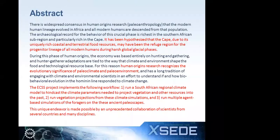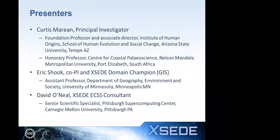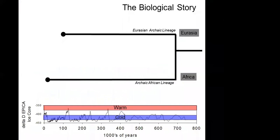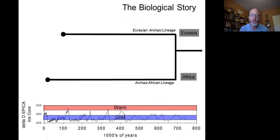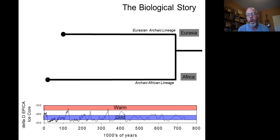Thanks, Nancy. So what I thought I'd do is start with some of the background on the research question. This is a slide I have to update probably every six months because we're making enormously fast progress on understanding the human origin story. This is going to give you the biological background relative to a very broad climate context. We're talking about the origins of modern humans — the species we belong to and that dominates the planet today.